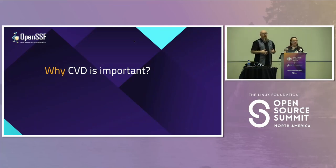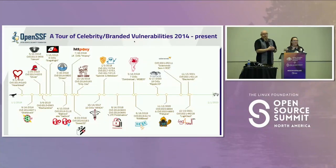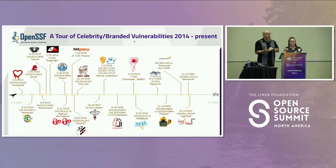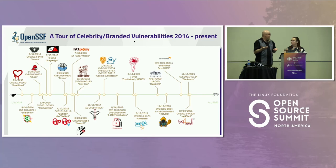Now let's talk about why CVD is important. This is a little tour through the years — you may recognize some of these celebrity logos. This is a string of both open and proprietary vulnerabilities starting with Heartbleed, which kicked off this trend of celebrity naming of vulnerabilities back in 2014. These types of celebrity events generate a substantial amount of media, government, and customer interest — it up-levels the pressure within your vulnerability disclosure process if something like this happens and gets branded.